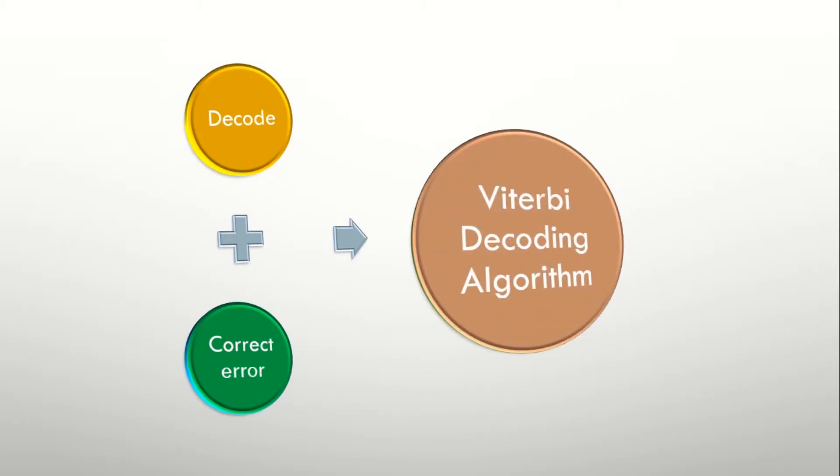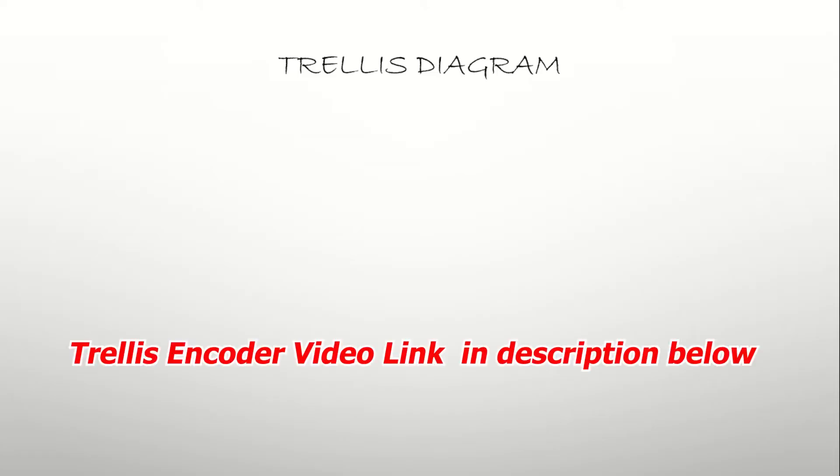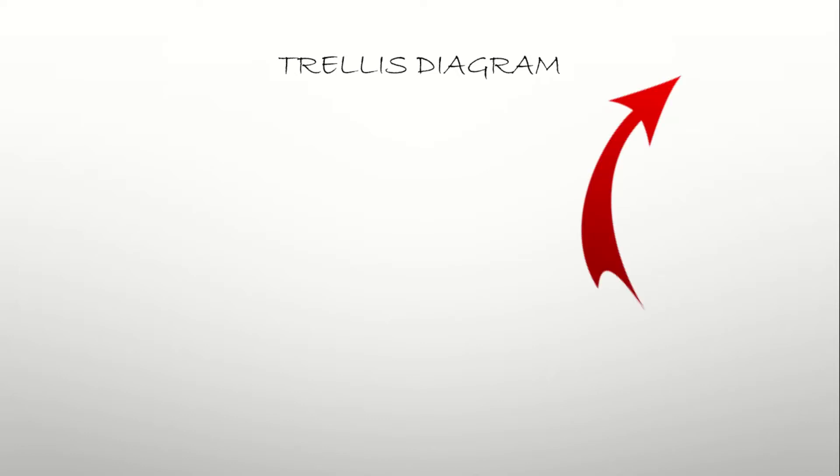Before starting the decoding algorithm, we should know some basics of the trellis diagram. The detailed explanation of how the message bits are encoded using the trellis diagram is given in the description below and you can see it in the pop-up also. Here I'll give a brief overview of the trellis diagram.